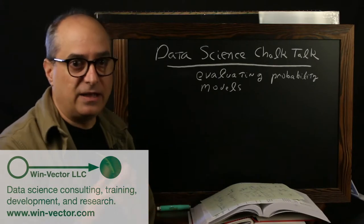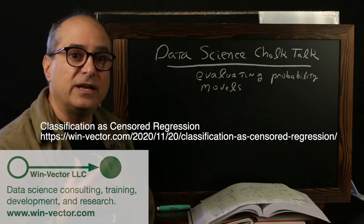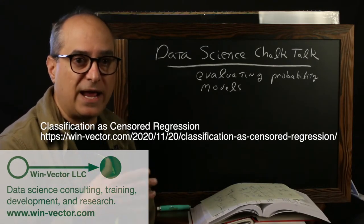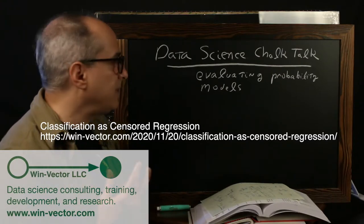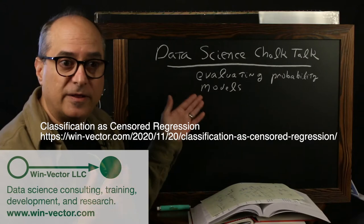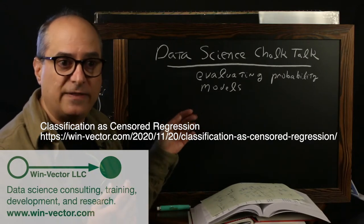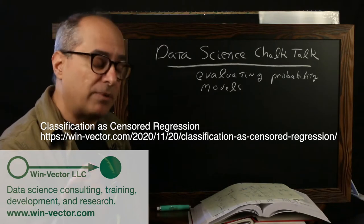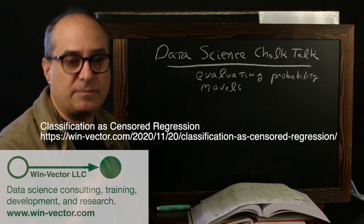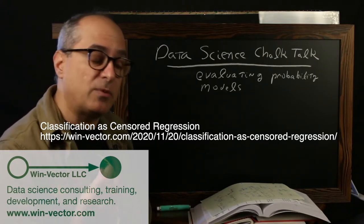So your training data, as we've said in our previous lecture, is somewhat censored. We're only showing what happens, not the probability of it happening. A probability model is a model that rises to that challenge, and even though the training data only had what happened, the probability model actually returns estimated probabilities of events, which is more detailed data.